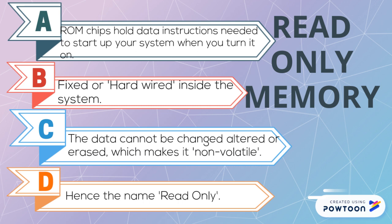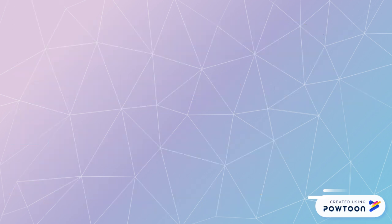So ROM is basically permanent storage — it cannot be changed or altered — whereas RAM is temporary storage. Because of the permanence of ROM, they came up with some variations to allow individuals to actually create their own instructions.